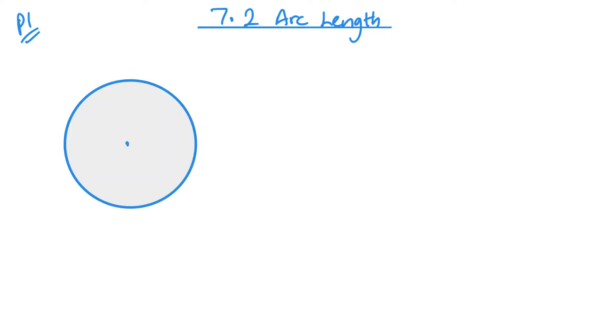So if I think about my circle, and I have an angle here theta, and these are both my radiuses, and here's my arc length here. Now the formula for this arc length is simply r multiplied by theta, where theta is in radians.